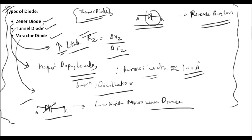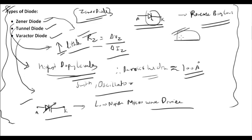For objective questions, you don't need to remember the working of Zener, tunnel, or varactor diodes. For tunnel diode, the key fact is highest doping level. Zener diode is used in voltage regulators and for finding dynamic resistance. This concludes the topic of semiconductor diodes. Please ask questions in the Telegram group, subscribe to the channel, and join the quiz tournament running from 10th to 27th April. See you in the next video.